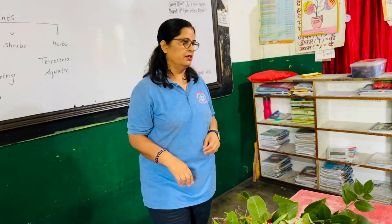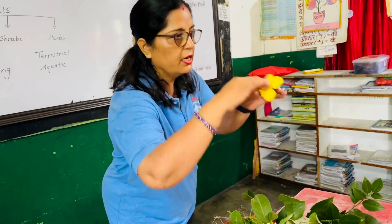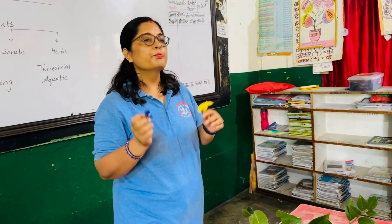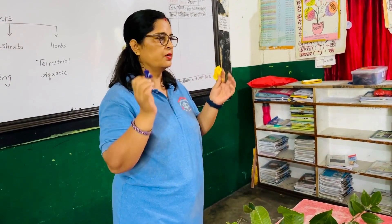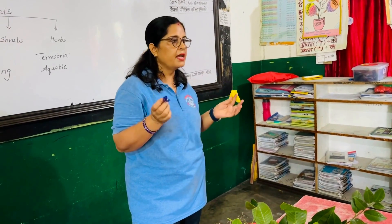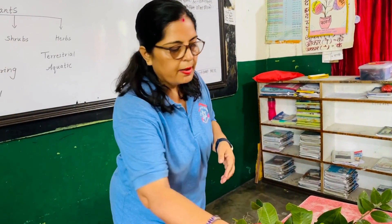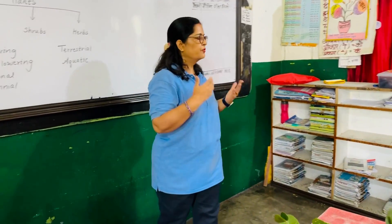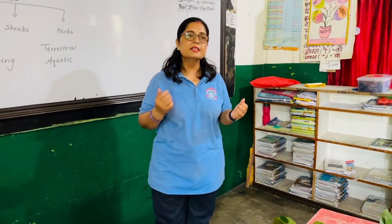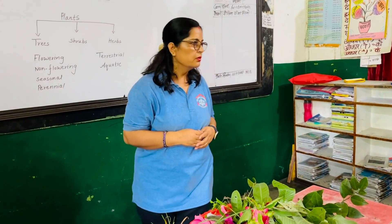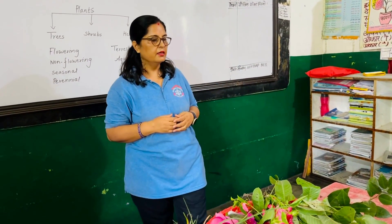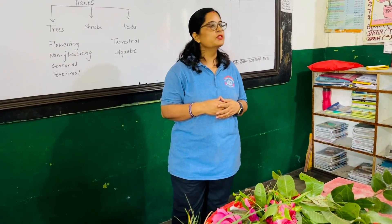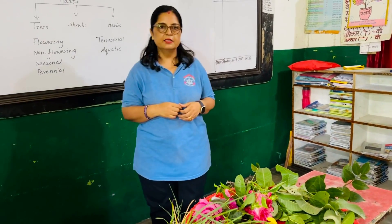Flowers have different colors such as yellow, blue, white, red, pink — different types of colors. Flowers give us fruits and seeds. Inside fruits there are so many seeds, and those seeds grow into new plants. So flowers are very important parts of the plant — flowers are the reproductive part of the plant.